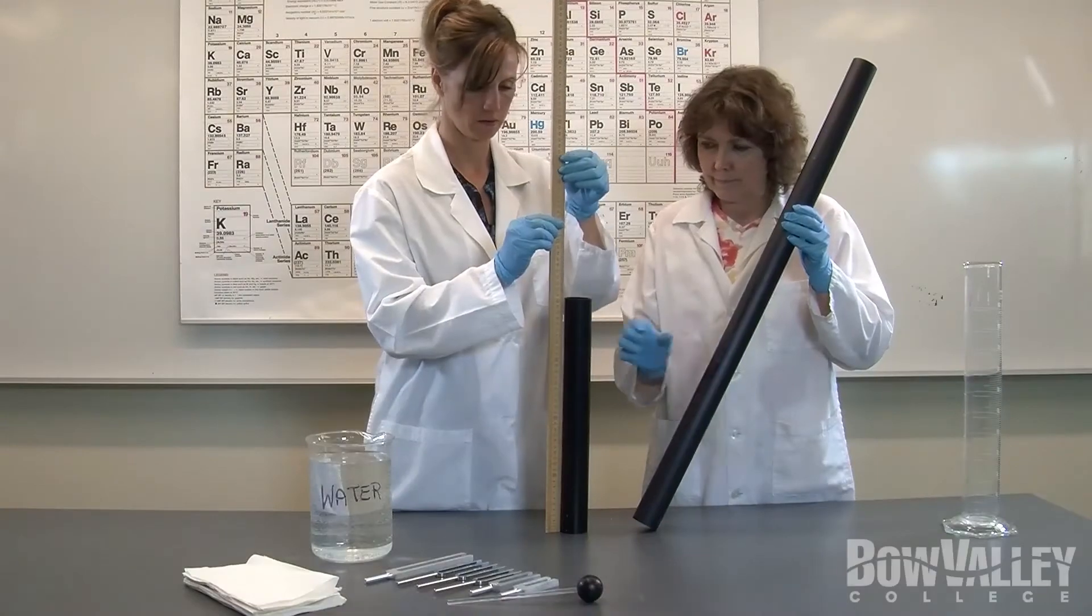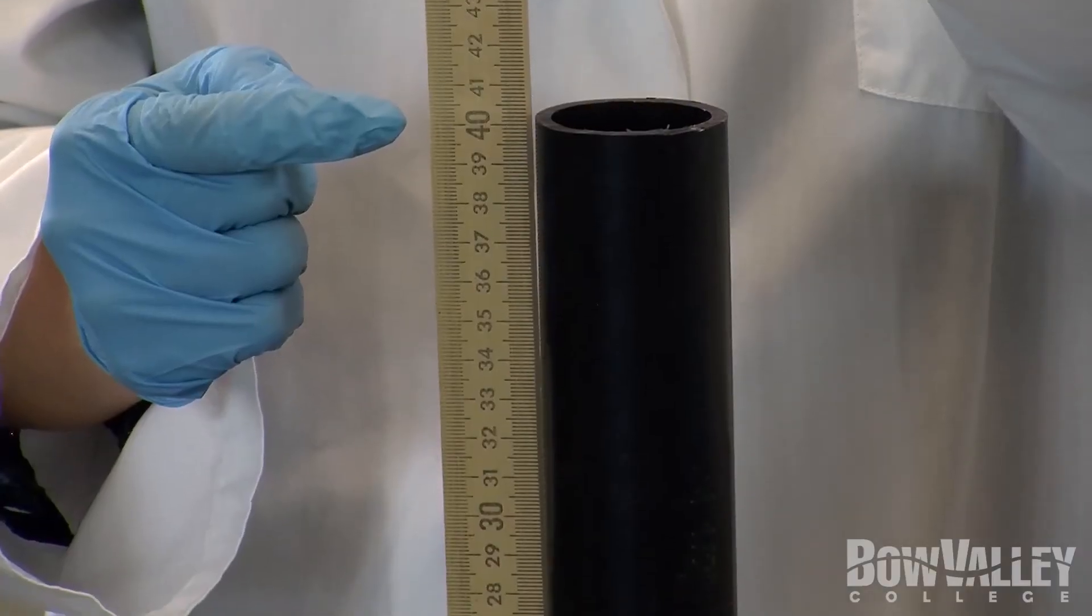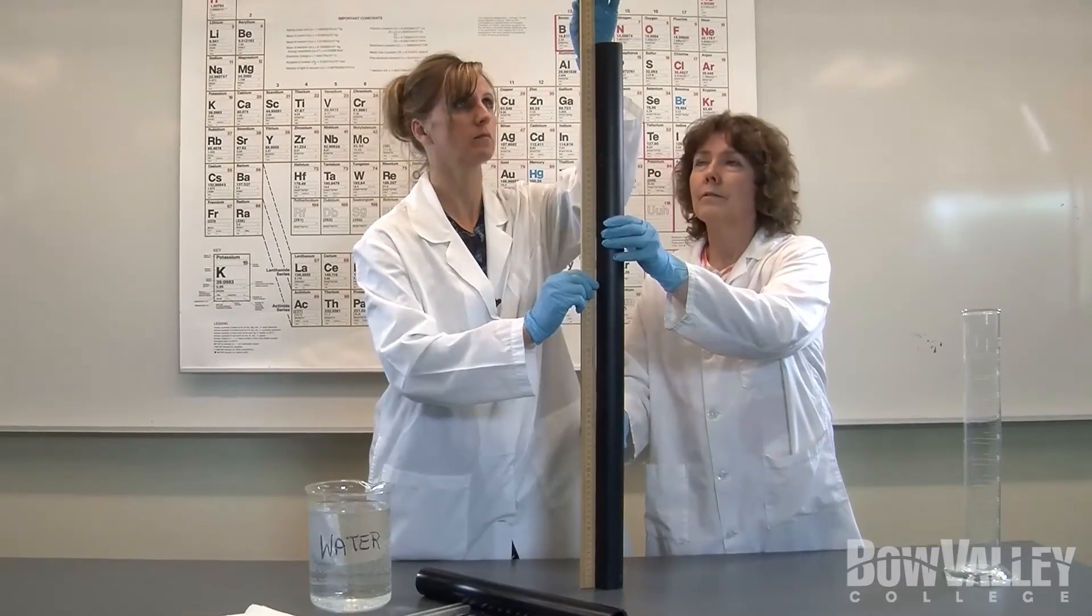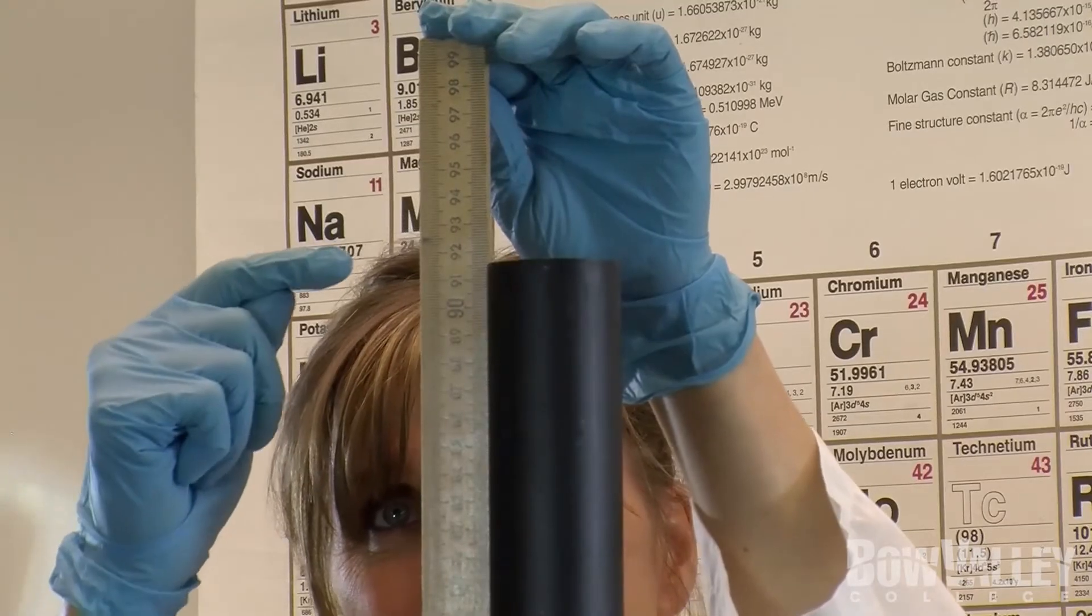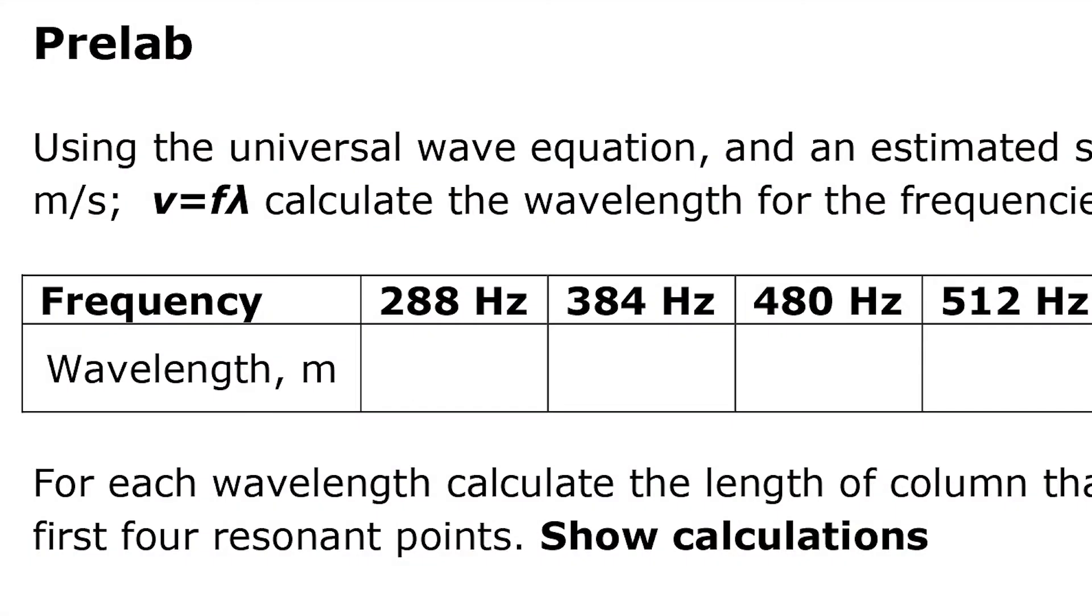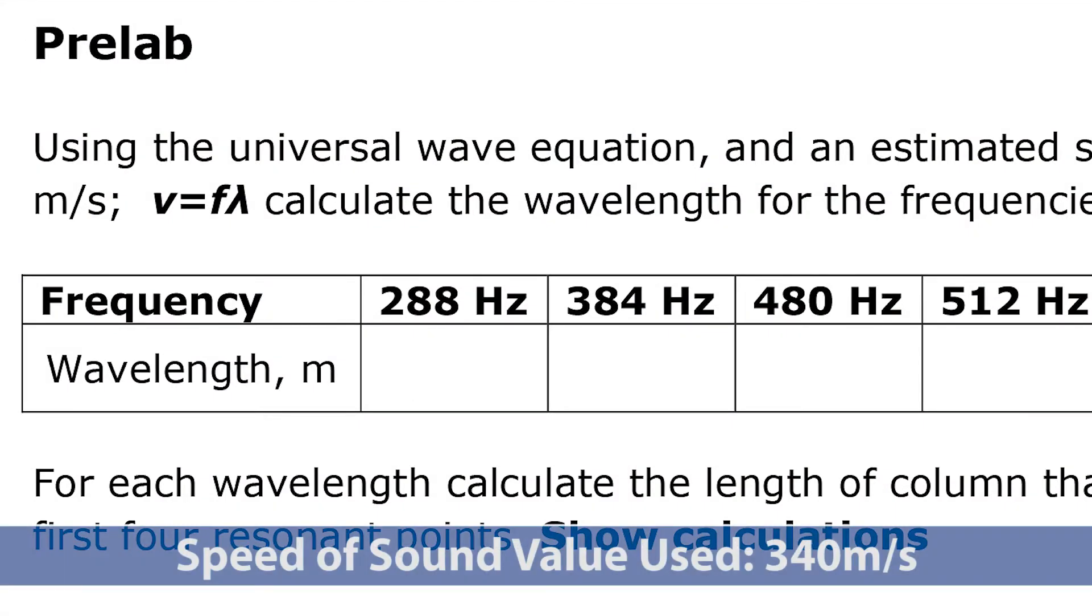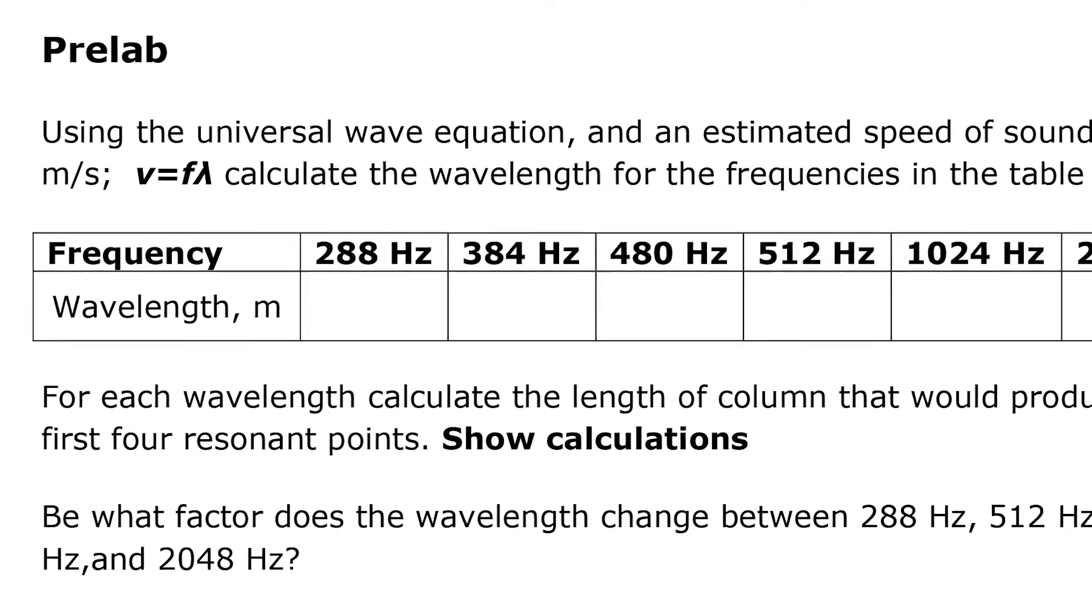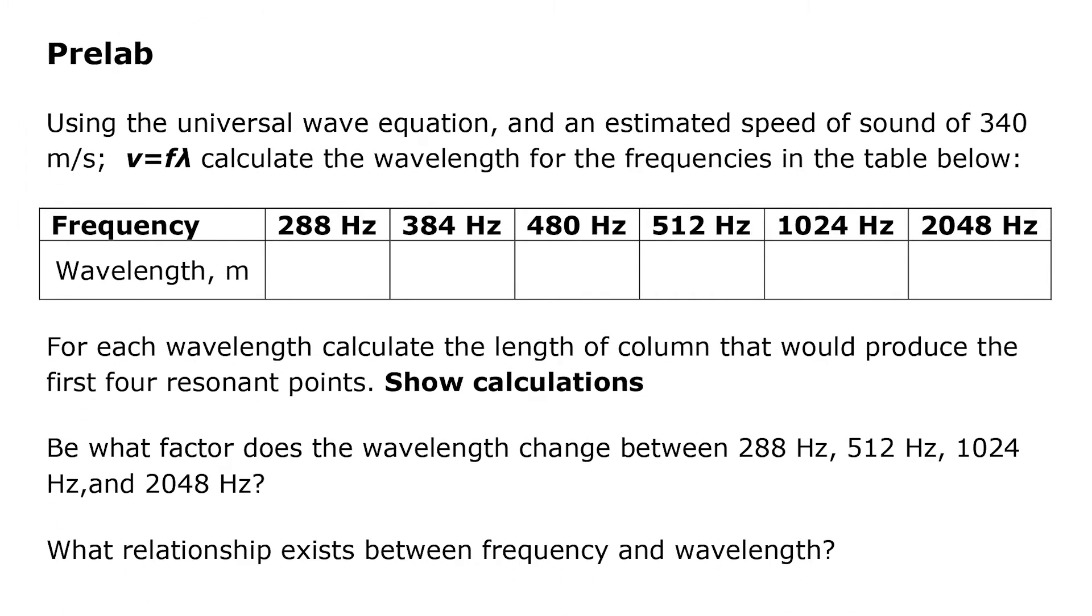To start, measure the length of each pipe to determine which tuning fork will create resonance points that can be measured. In the pre-lab, you calculated approximate lengths of each resonant point using a value of 340 meters per second for the speed of sound. When you find the actual length, which will be close to your predicted value, you will be able to determine a more accurate value for the speed of sound based on your location.